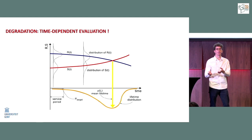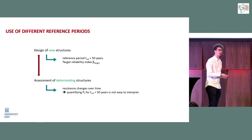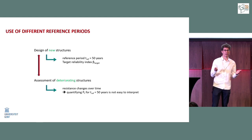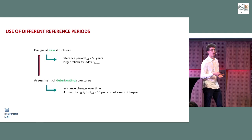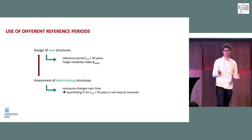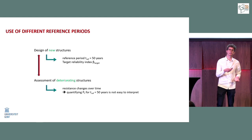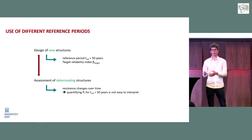The new approach evaluates failure probability year by year throughout the structure's lifetime. In each individual year, the variable load is taken with a one-year reference period instead of a 50-year reference period. This is the main difference between the treatment of degrading and non-degrading structures. Additionally, the target beta value itself depends on the reference period.